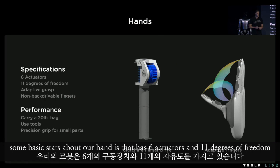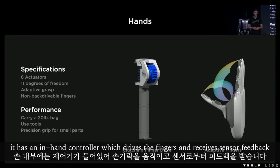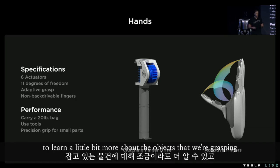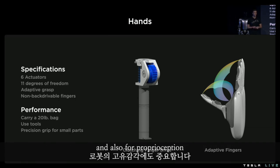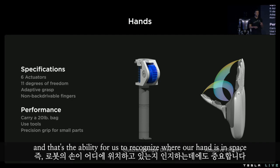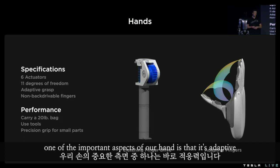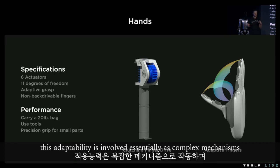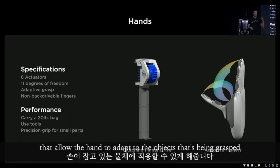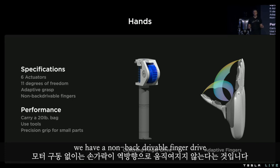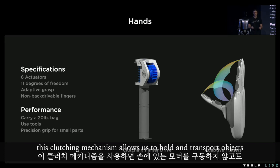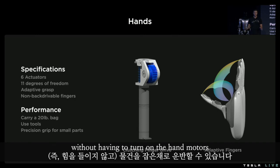Some basic stats about our hand: it has six actuators and 11 degrees of freedom. It has an in-hand controller which drives the fingers and receives sensor feedback. Sensor feedback is important to learn about the objects we're grasping and for proprioception — the ability to recognize where our hand is in space. One important aspect is that the hand is adaptive, with complex mechanisms allowing it to adapt to the objects being grasped.